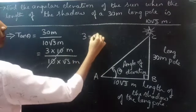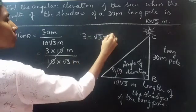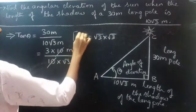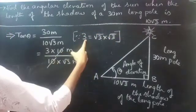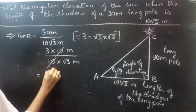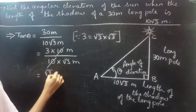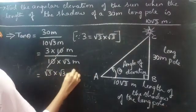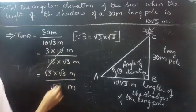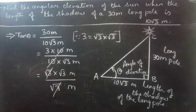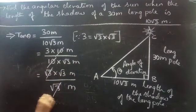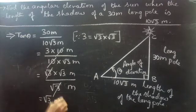10 and 10 get cancelled. Now 3 can be written as root 3 into root 3, since root 3 into root 3 is 3. So we replace 3 by root 3 into root 3, giving root 3 into root 3 meter divided by root 3 meter. Root 3 gets cancelled and finally you get root 3.